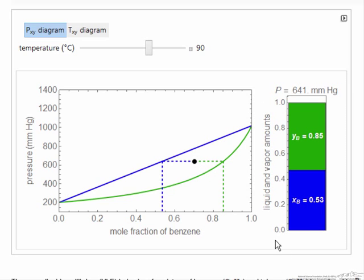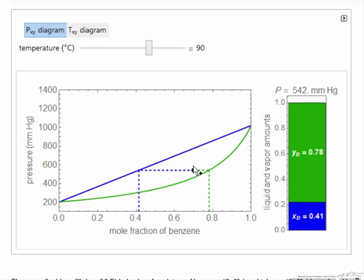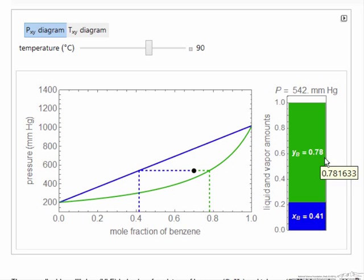On the right, this is reflected in the relative amounts of liquid and vapor. For example, as I move the point down, we have more vapor, less liquid, and the mole fractions of those phases are indicated here.